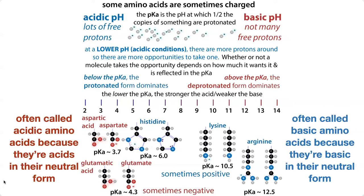In the case of our basic amino acids — histidine, lysine, and arginine — we call them bases because in their neutral form they act as a base, taking a proton and becoming positively charged. In this positively charged state, this is their conjugate acid form, and therefore they'd be able to act as an acid.